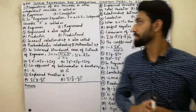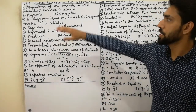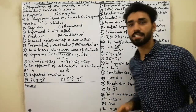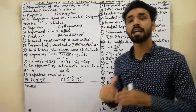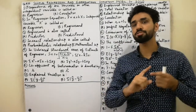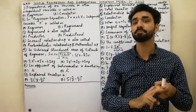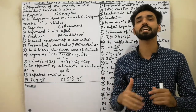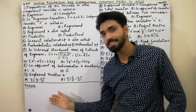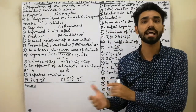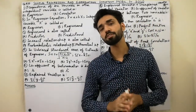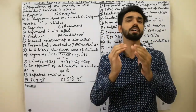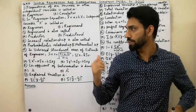Assalamu alaikum dear friends. Today I am here to explain Chapter 10: Simple Regression and Correlation — important MCQs. These MCQs are very important for you, so watch this lecture completely. I will tell you the reasons, explanations, and solutions for why the MCQs are correct. If you want MCQs for all chapters by book Shah Muhammad Chaudhry, must watch the description below the video. Let's start the lecture.